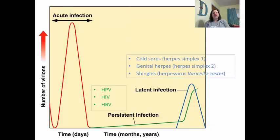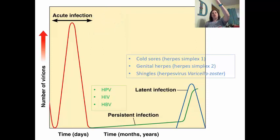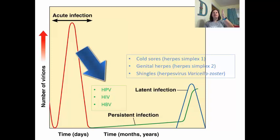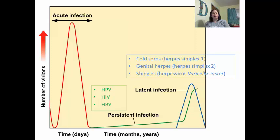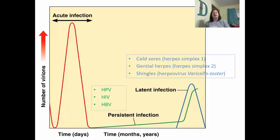Most of the time, viral infections are very acute, meaning they are short-term. They peak and then eventually die out. However, some viruses cause persistent infections, where the first infection starts to go down but over months and years starts to increase and cause a problem — things like HPV, HIV, and HBV. Other infections are considered latent infections: once you have them, they sit latent or dormant in your body, and stressors can trigger an infection to come up later. Examples are cold sores, genital herpes, and shingles.